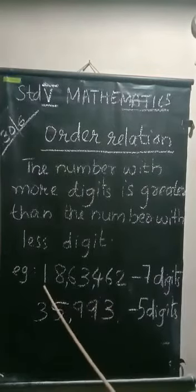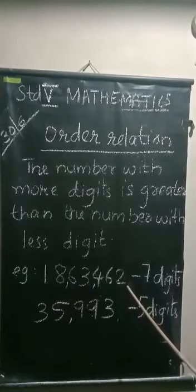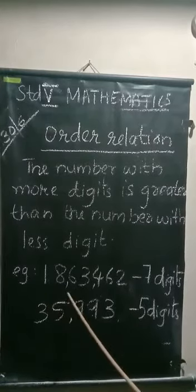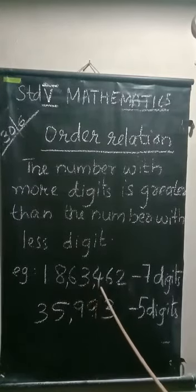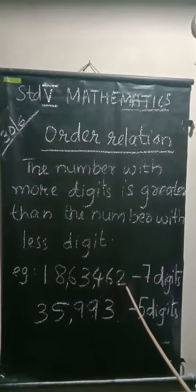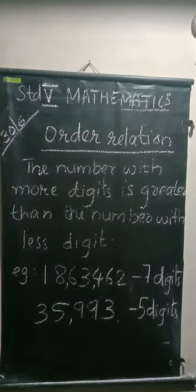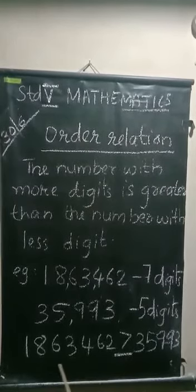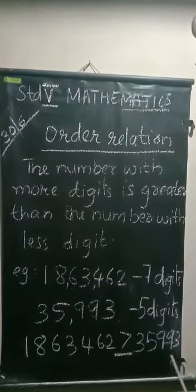Which number has more digits? Yes. This number has more digits than this number. So, we can say 18,63,462 is the greater number.